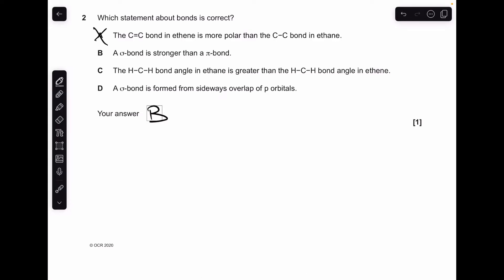I'll just run through C and D for revision. The H-C-H bond angle in ethane is 109.5 degrees. The H-C-H bond angle in ethene is actually 120 degrees, so the bond angle in ethane is actually lower than the one in ethene. And D, a sigma bond is formed from sideways overlap of pi orbitals. Nope, that's wrong, because sigma bonds form from the direct or end-to-end overlap of orbitals.